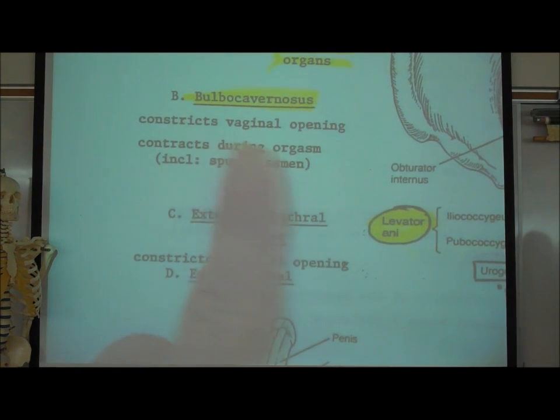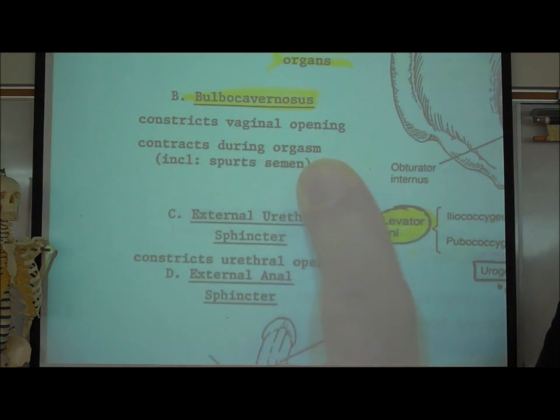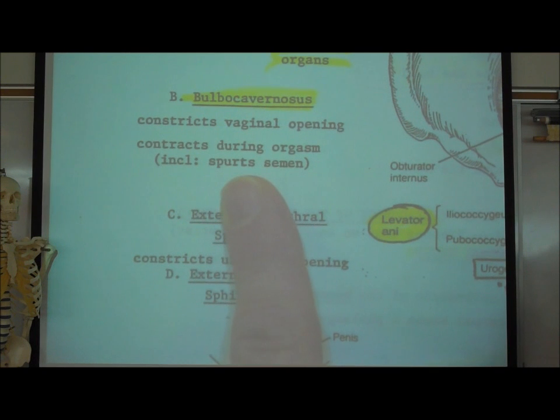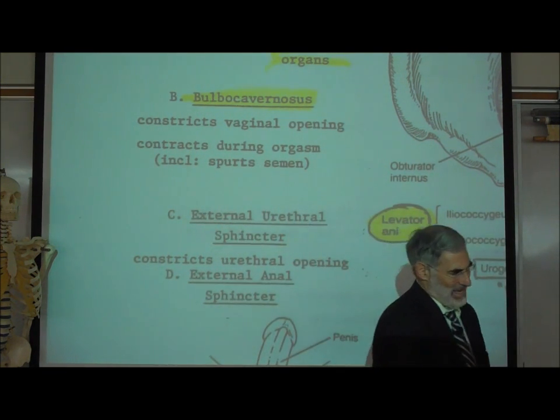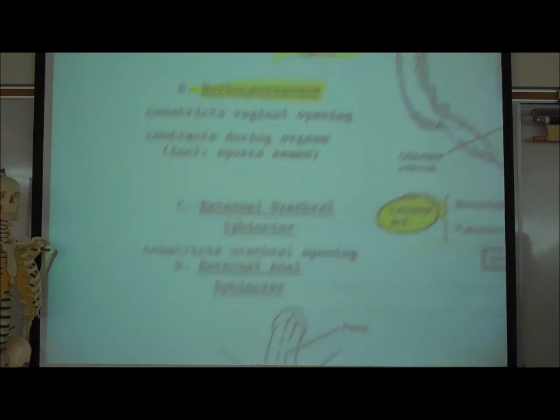The way that I summarized it is, I just wrote, it constricts the vaginal opening or vaginal canal. It contracts during an orgasm. It spurts semen out and so on. That's the bulbocavernosus.